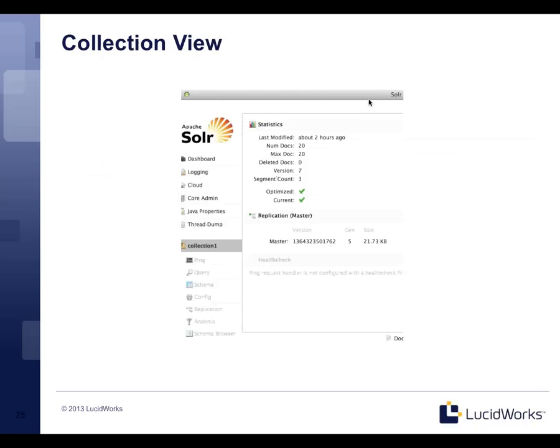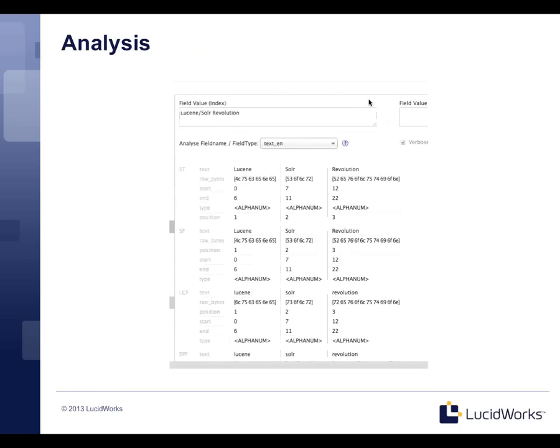We have a collection view showing the default out-of-the-box Solr 4.x setup with collection one and document counts. One of the nice tools in the UI is an analysis view — it allows you to take arbitrary text, pick a field name or field type from your schema, and apply both indexing and query analysis to break down the text into what ultimately becomes indexed terms in the Lucene index. This is a great tool for developers to see how text becomes indexed and searchable.